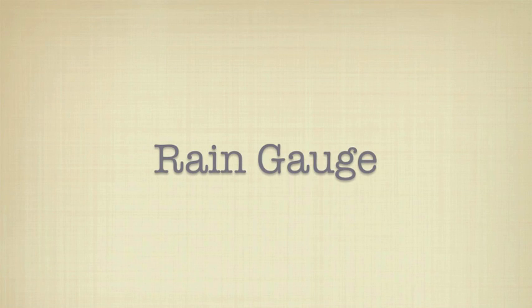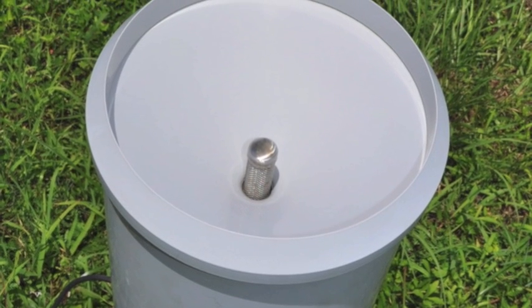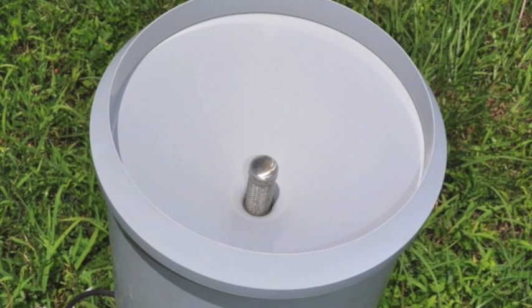Today I will explain how the Mesonet's rain gauges work. The TB3 is our most accurate rain gauge because it possesses a siphon to control water flow.